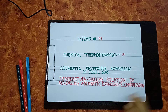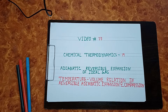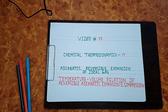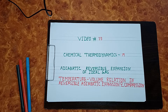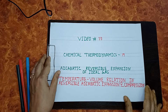Hello viewers, welcome to video number 77 of the channel ChemPhilip. Video number 77 is the 19th episode of Chemical Thermodynamics. The topics of this episode are: number 1, adiabatic reversible expansion of ideal gas, and number 2, temperature-volume relation in reversible adiabatic expansion and compression. Let's start.